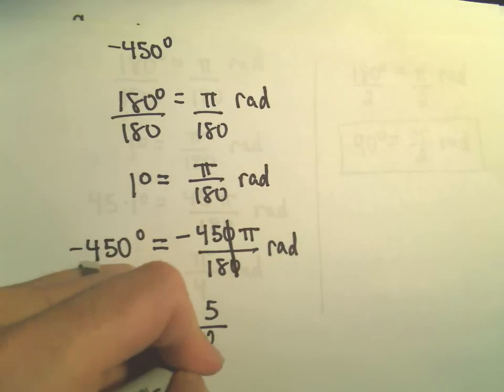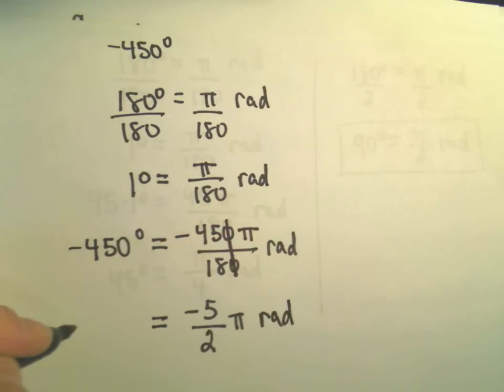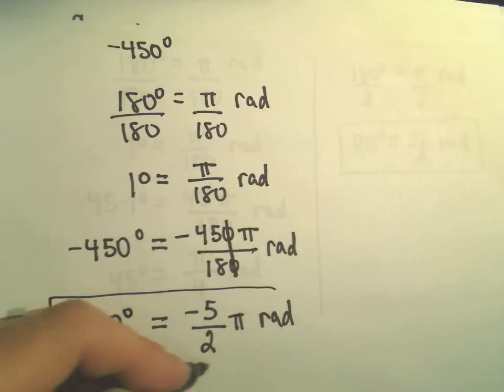9 will go into 18 twice. Got to keep our negative there. But now we've got the equivalent measure. So negative 450 degrees and negative 5 pi over 2 radians are equivalent.